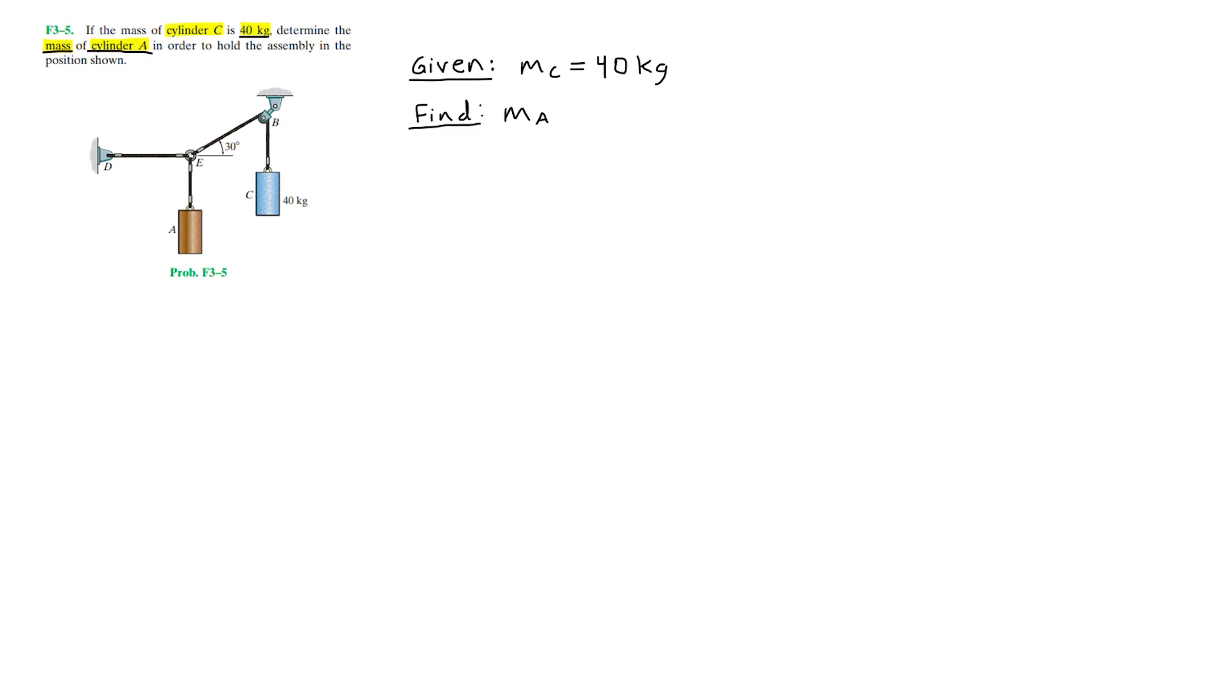This specific mass has to be able to hold the assembly in the position as shown in the sketch, where the wire EB is at a 30 degree angle from the horizontal line. Here is the 40 kilogram mass, and on the left, I'll write down the mass of cylinder A.